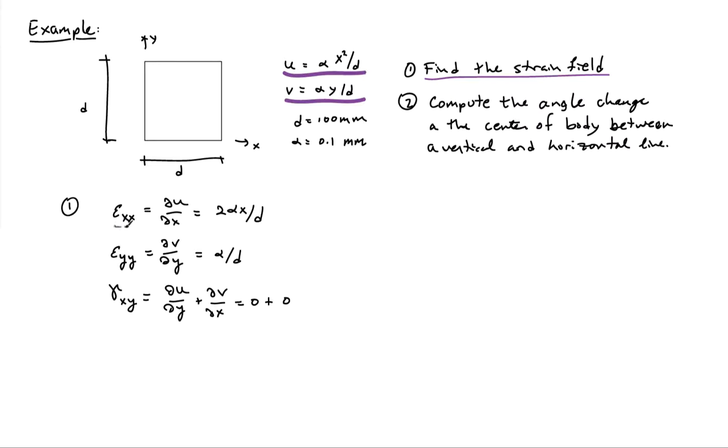The normal strain in the x direction is the derivative of u with respect to x, which gives 2 alpha x over d. The normal strain in the y direction is the partial derivative of v with respect to y, which gives alpha over d.